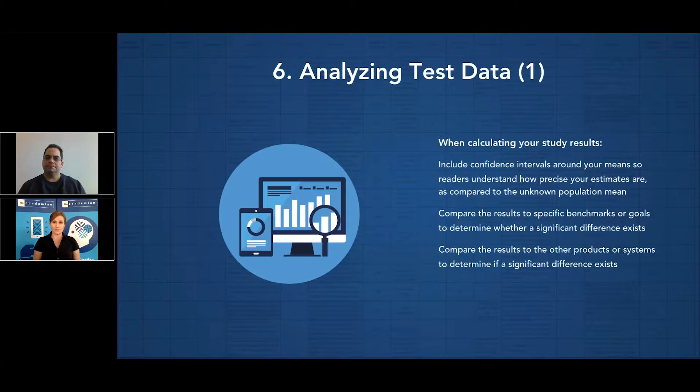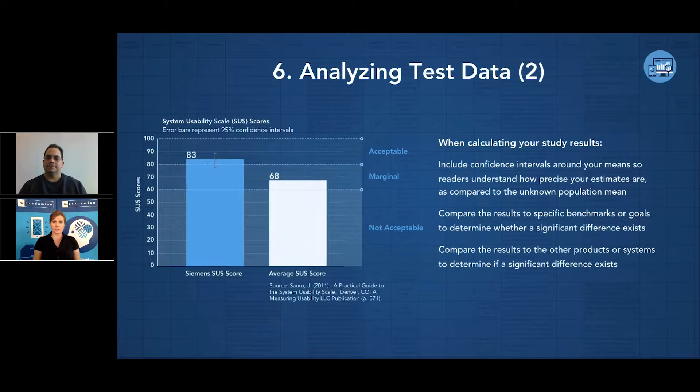When you are calculating your test results, it is helpful for readers or consumers of your results to understand how precise your estimates are compared to the unknown population value. Try to report your results with confidence intervals around any means that you've calculated. This helps to provide readers with the most likely range of the unknown population mean or proportion.